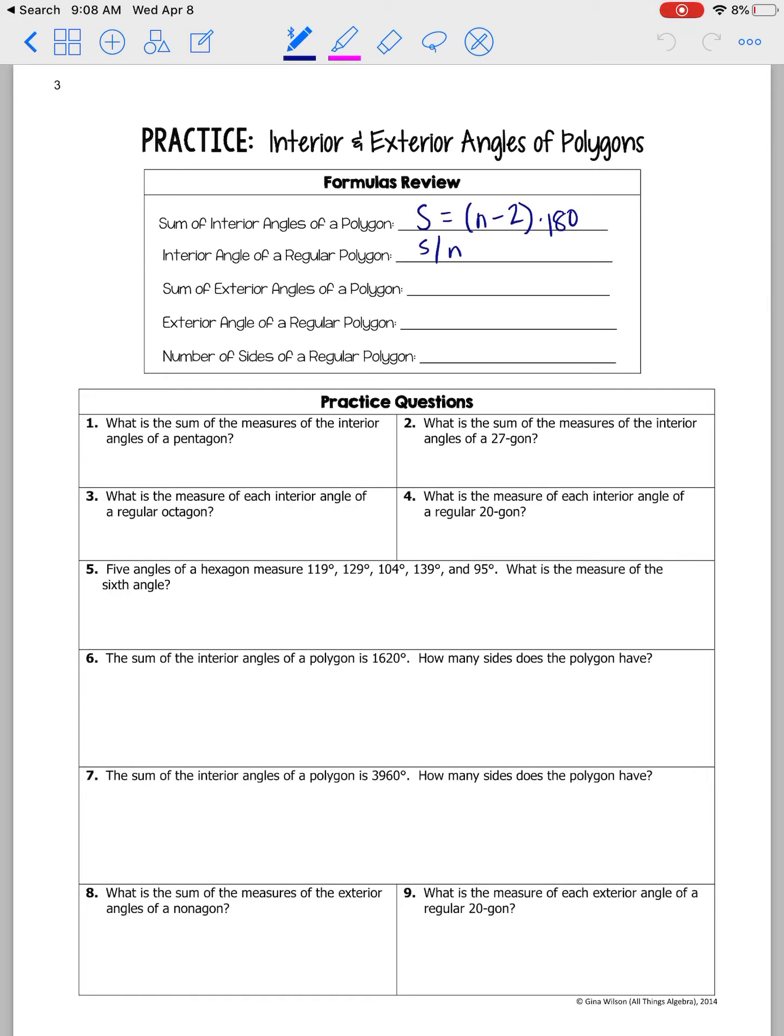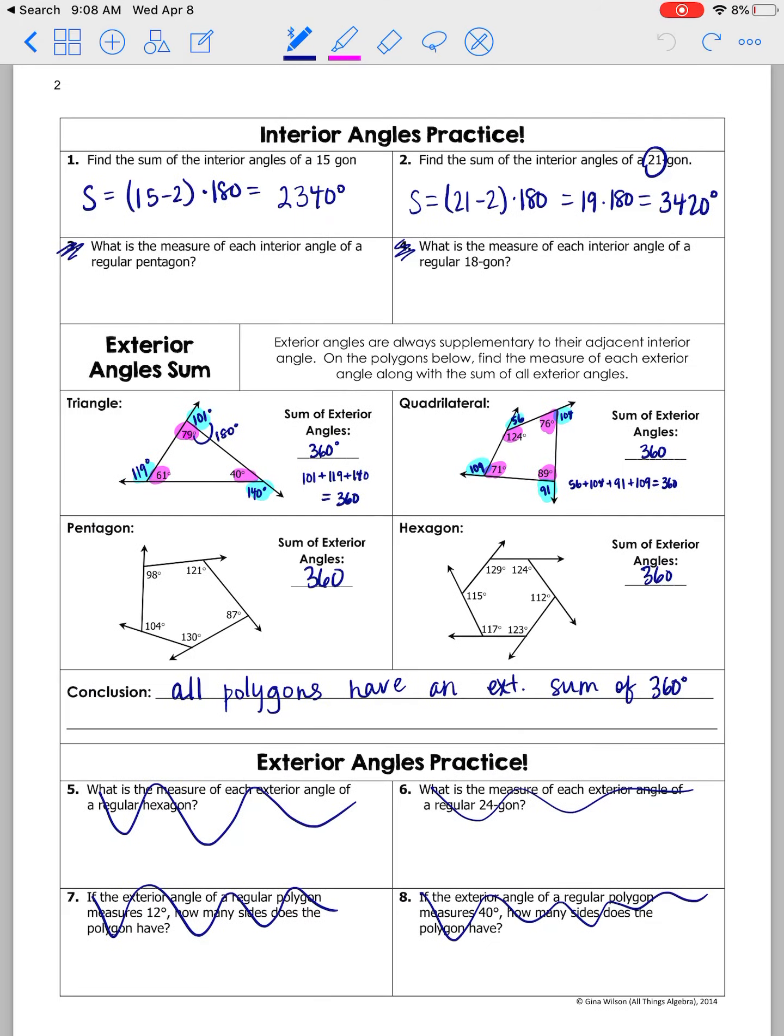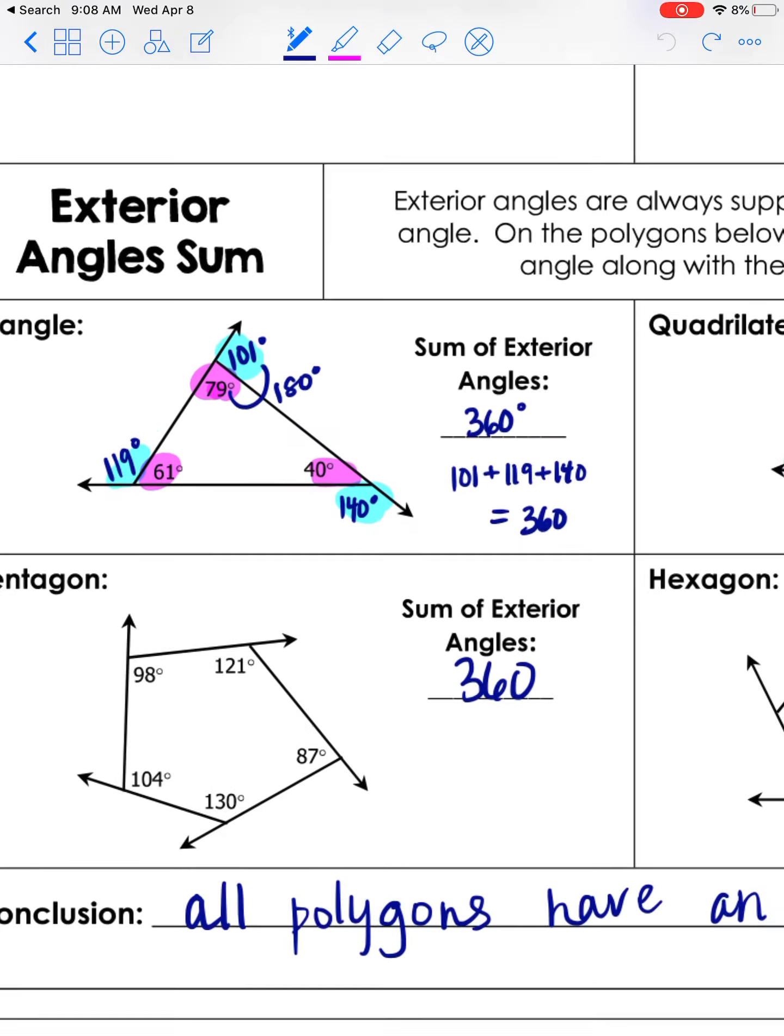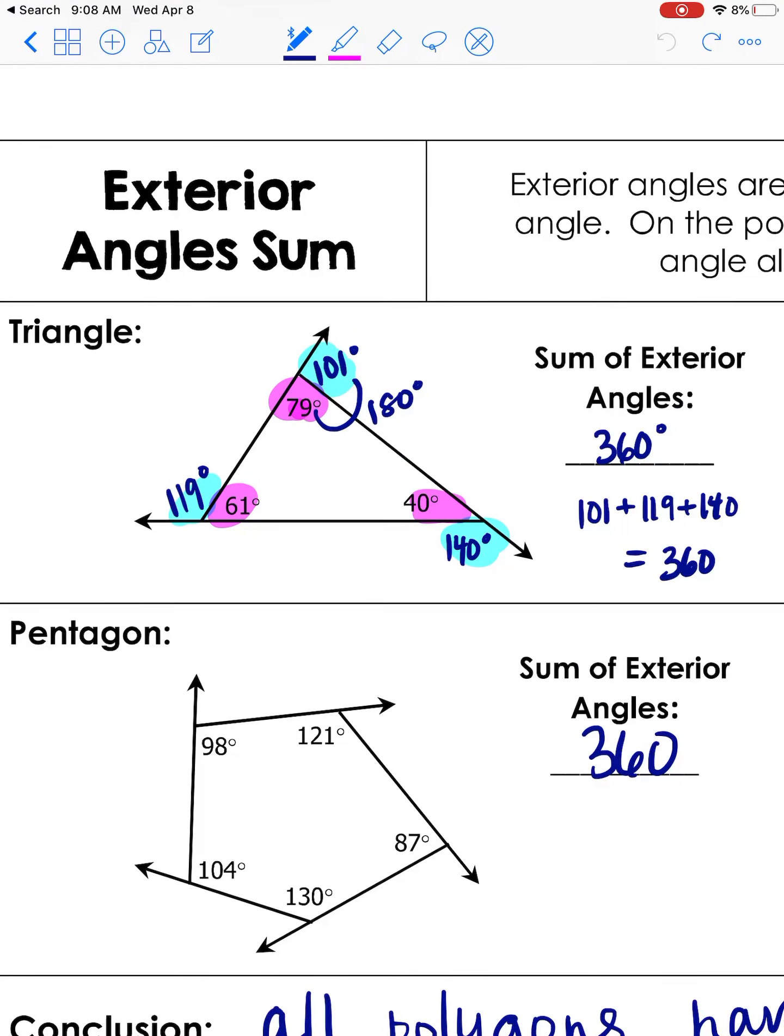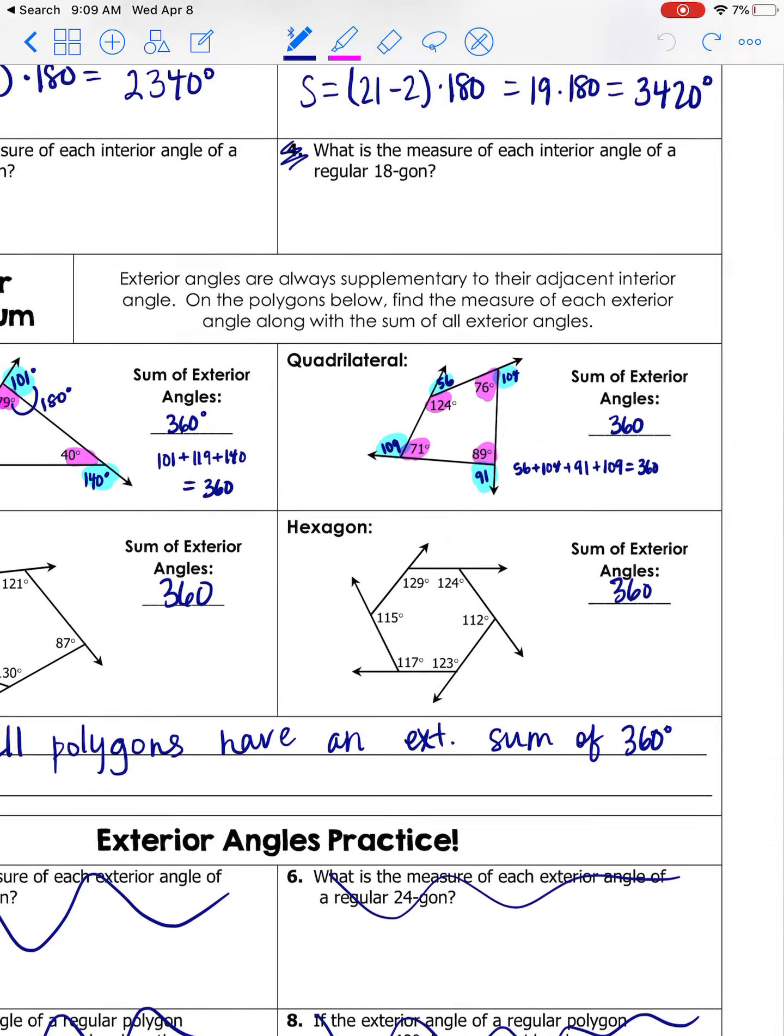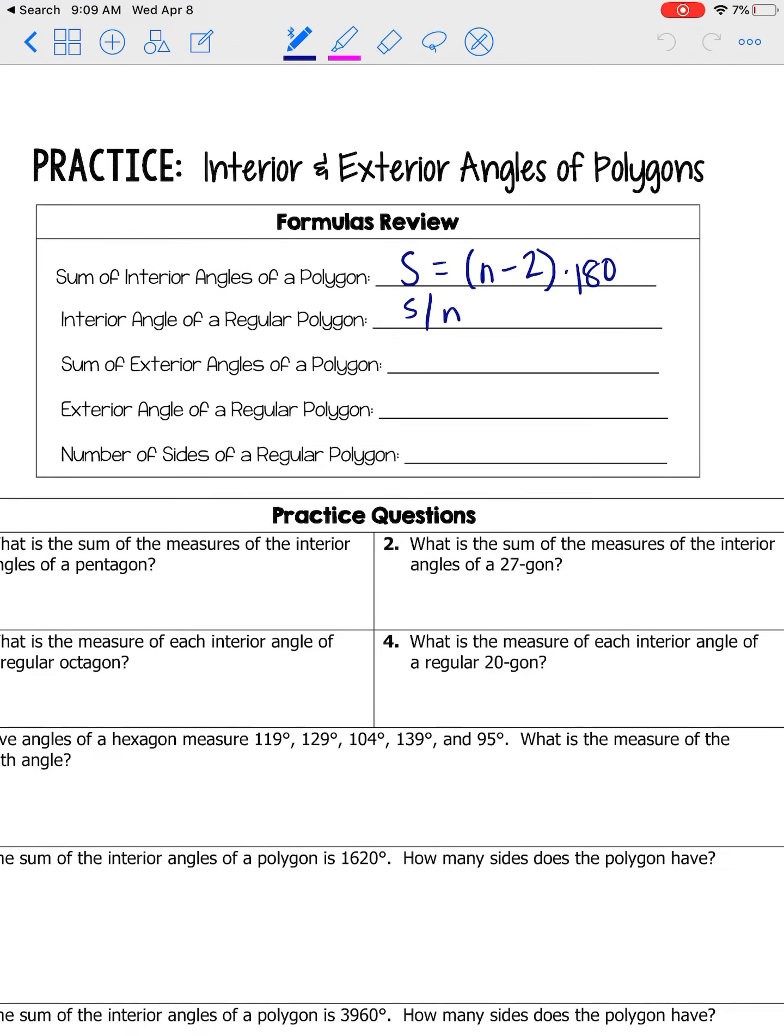Next, we have exterior angles. So the exterior angle of a polygon is the one that is adjacent and forms a linear pair with the interior. So looking at this triangle, 79 is the interior, 101 is the exterior. Together, they form 180 degrees. And we figured out together that the sum of the exterior angles of a polygon is always going to be 360 degrees. Always, always, always. Doesn't matter what polygon it is.